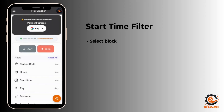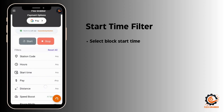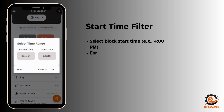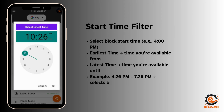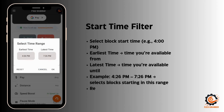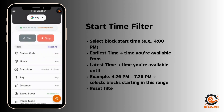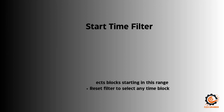Now we have another filter: starting time. This is the time at which your block starts — for example, starting at 4 p.m. There are two options: earliest and latest time. Earliest time is the time from which you are available, like from 4:26 p.m. to 7:26 p.m. The app will then select only blocks starting within that time range. You can reset the filter easily if you want to select any time block.